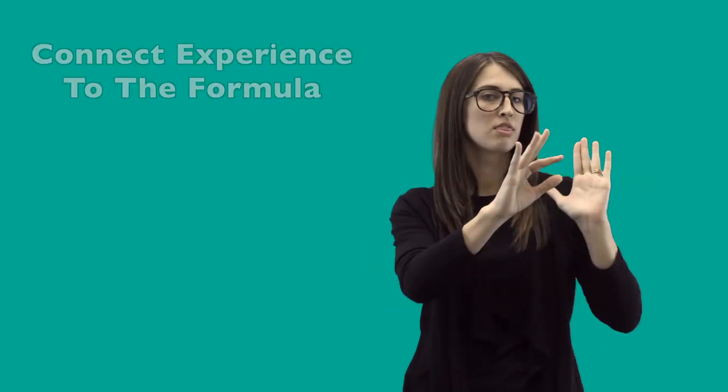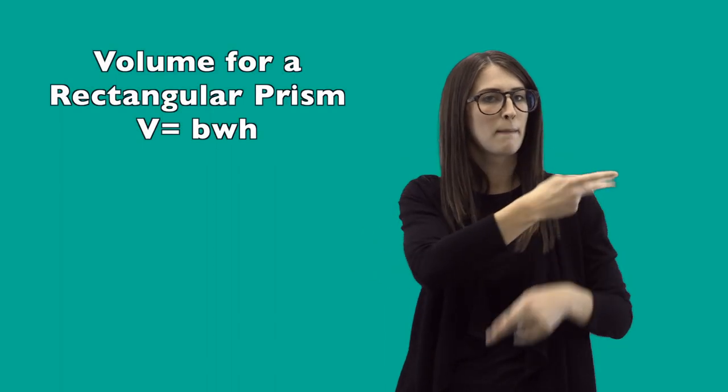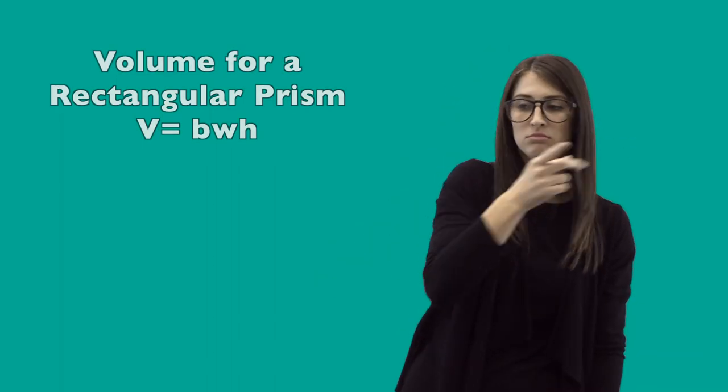They work together to try and figure out the solution, and the students notice that it takes two times to fill up the rectangular prism. The students start to make connections. Then we are able to discuss the volume formula. They notice the rectangular prism's formula is V equals B times W times H, meaning B as in base, W for width, and H for height.